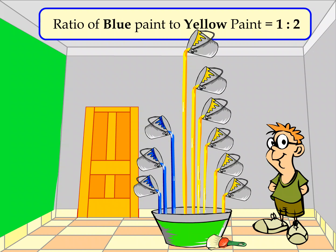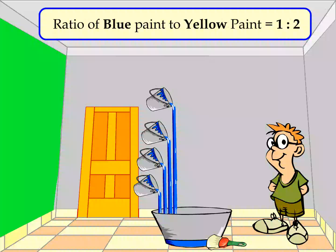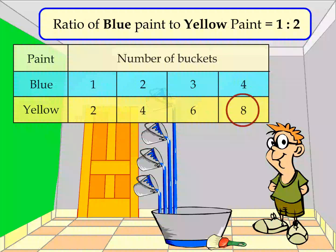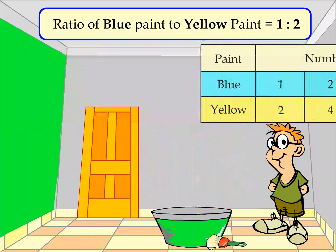Now, let us find out how much yellow paint Jack would use if he decides to use four buckets of blue paint in order to get his favorite green color. The ratio tells us that Jack mixes two buckets of yellow paint with each bucket of blue paint. So, for four buckets of blue paint, Jack would use four times two, or eight buckets of yellow paint.